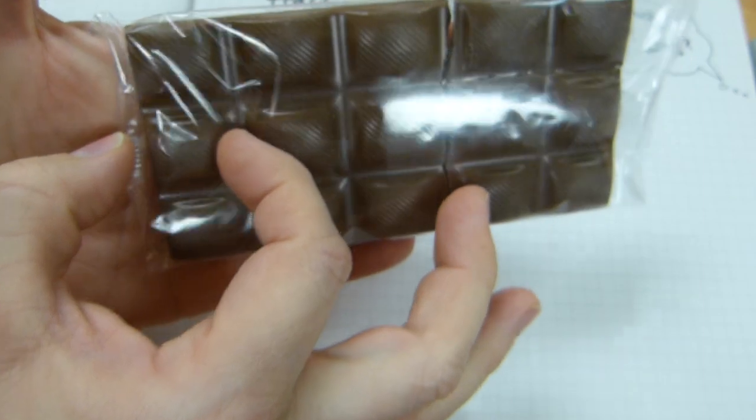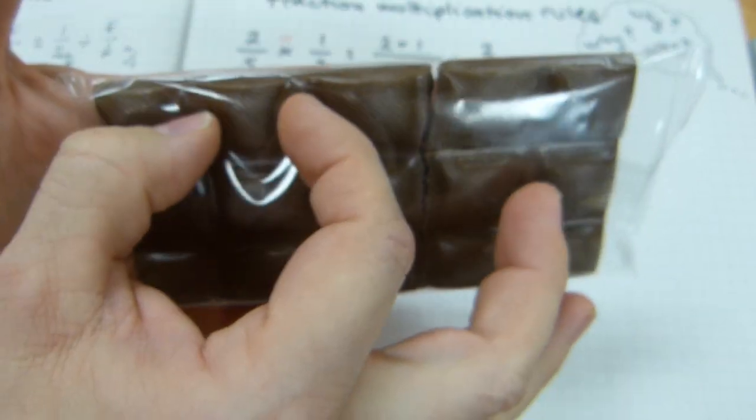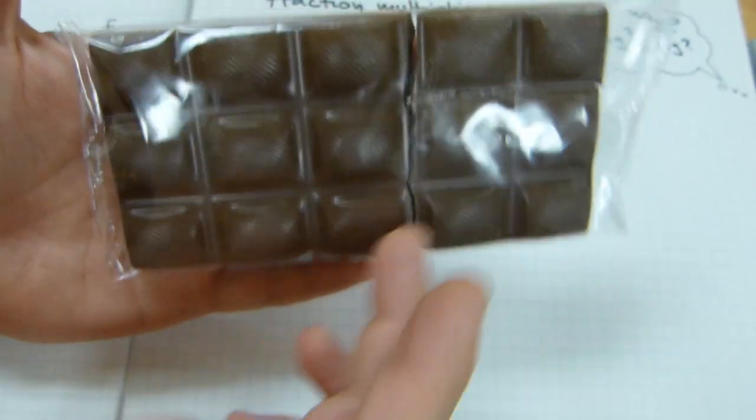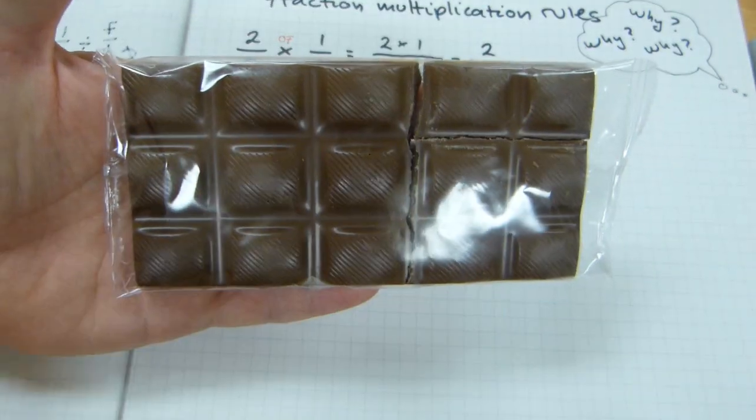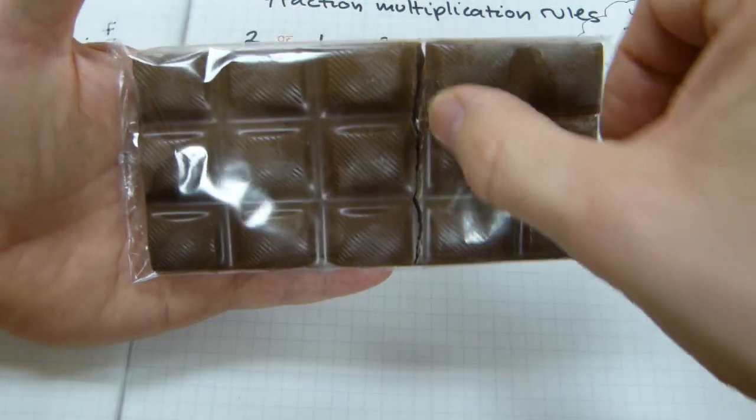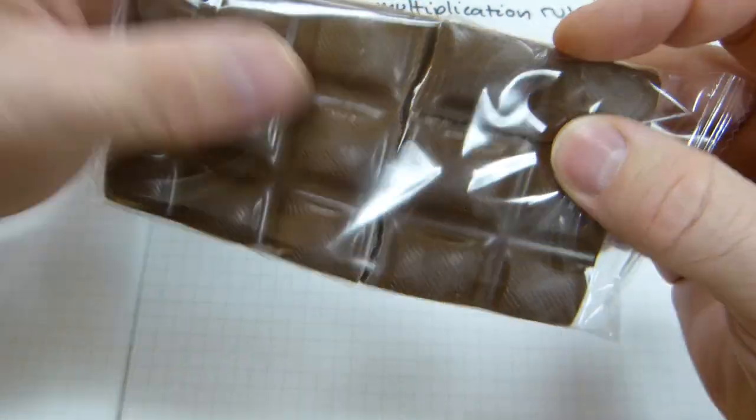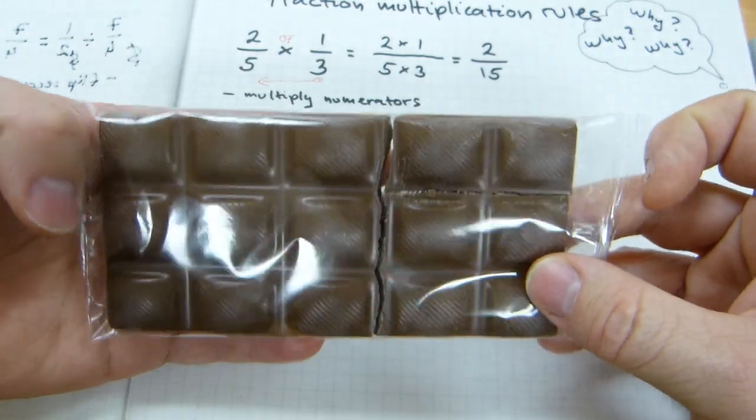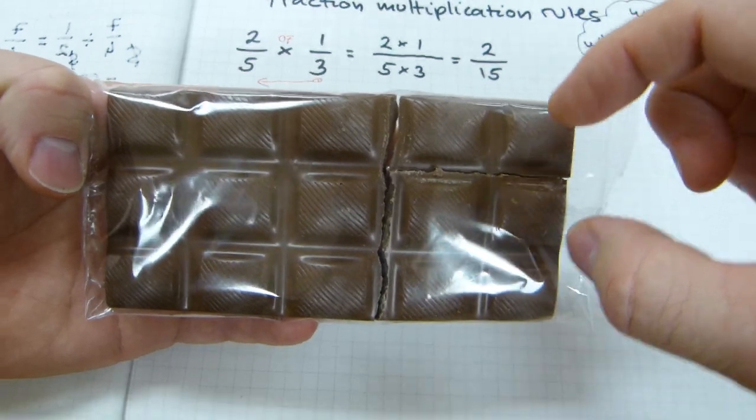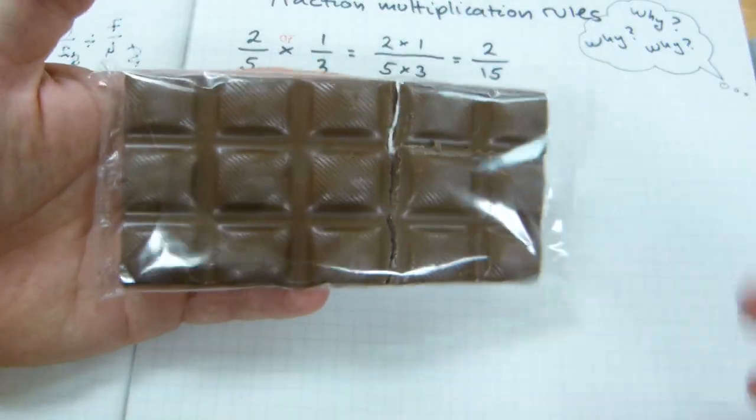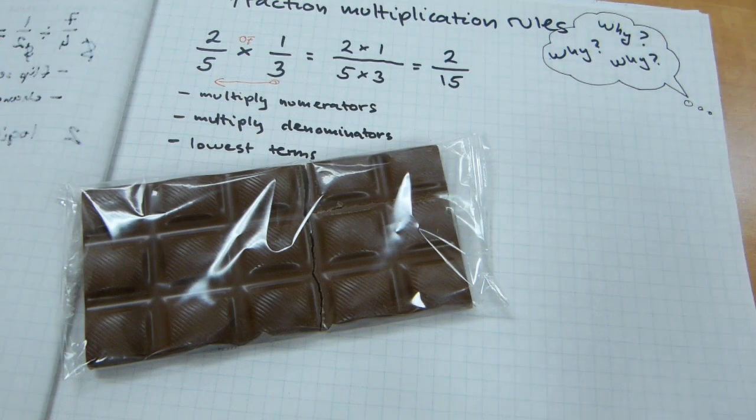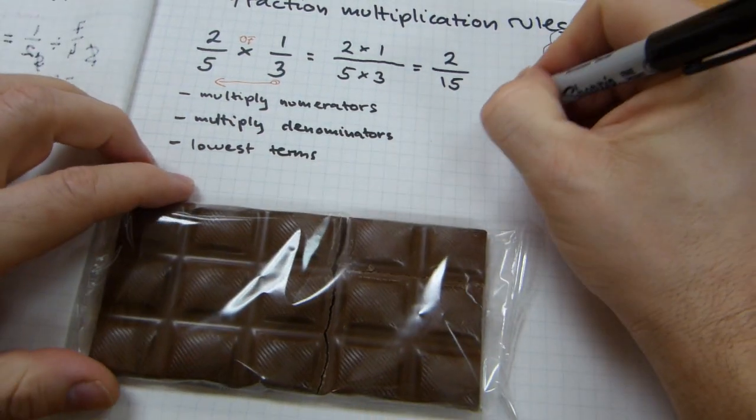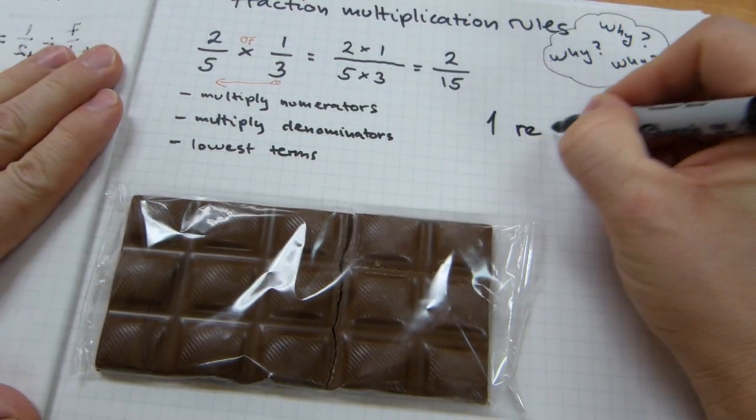The chocolate bar has 15 chocolate squares in it. So, that's 1 fifteenth, 2 fifteenth, 3 fifteenth, 4 fifteenth, 5 fifteenth. You get the idea. There are 15 fifteenths that make a whole. So, if I break off 1 third of 2 fifths, I'm going to have 2 fifteenths of the whole. Okay, I hope that makes sense. So, reason number 1, and I can write it here, is because of reality.